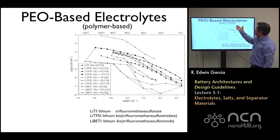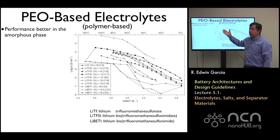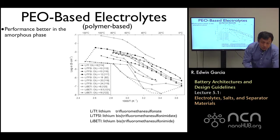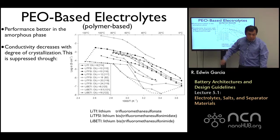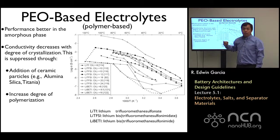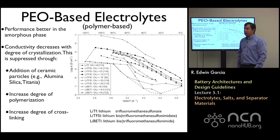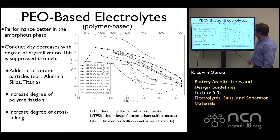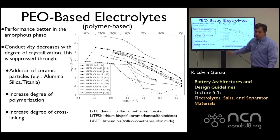Now here you have the PEO-based electrolytes — the polymer base — and you can see all the different chemistries as they're being used. The performance is better when you use them in the amorphous phase. In the crystalline phase, their conductivity drops. People typically suppress crystallization through the addition of ceramic particles or by increasing the degree of polymerization — because if you increase the degree of polymerization, it's harder for these molecules to move — and by increasing the degree of cross-linking. Depending on how many cross-links you have, you will also have different amounts of conductivity, so you really want to pick from the catalog based on what performance you want to deliver.